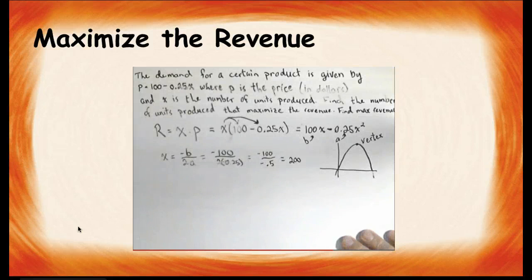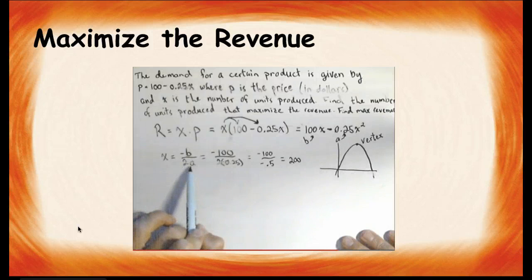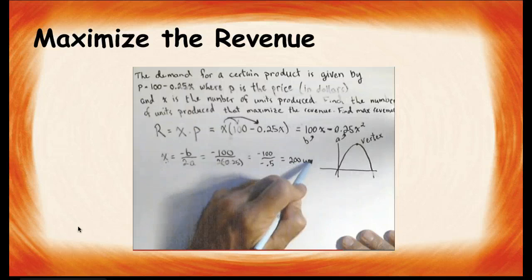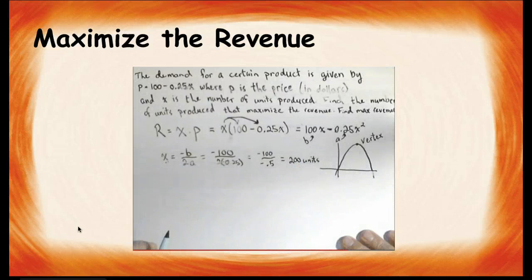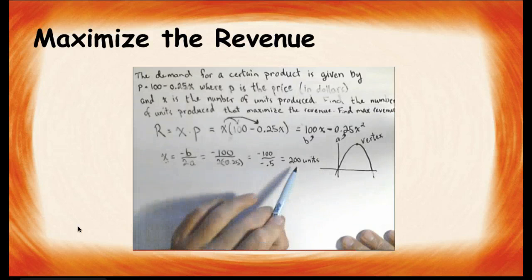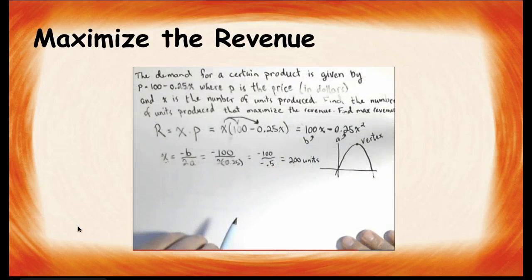Now, something to think about is, what is that 200? Well, this formula gives you the input of the vertex, or the x, so that's 200 units. So, that's how many units they should be producing and selling in order to maximize their revenue. Their maximum revenue comes from putting this 200 into our revenue function.